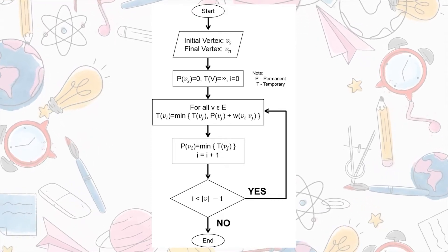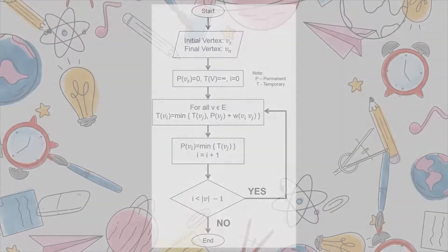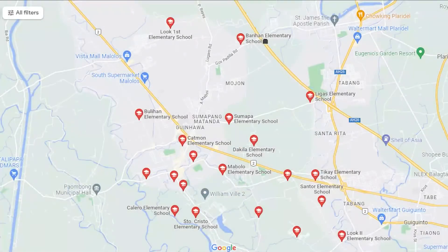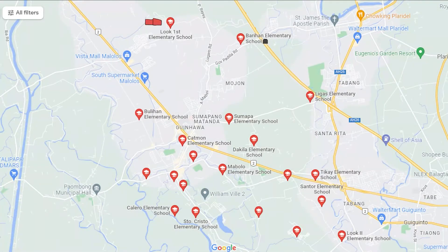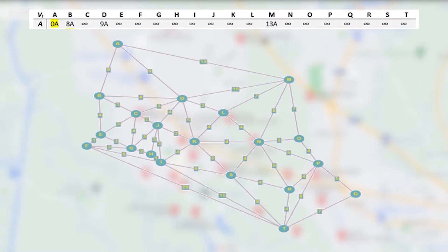If we will solve the shortest path from Luok First Elementary School, which is vertex A, to Mambog Elementary School, which is vertex T, by using the table format of the Dijkstra's algorithm, then here how it goes. We will start in vertex A, which will first permanently label vertex as 0.